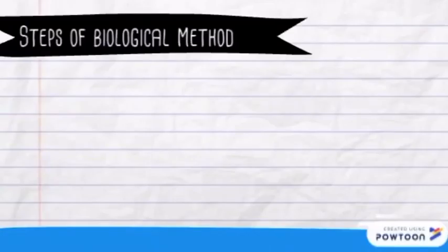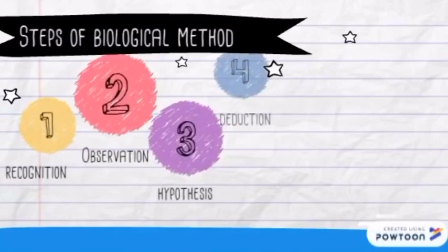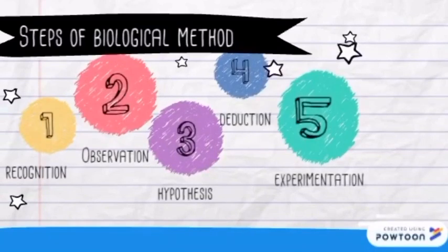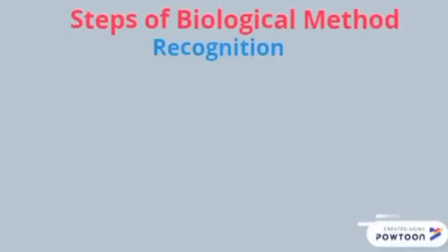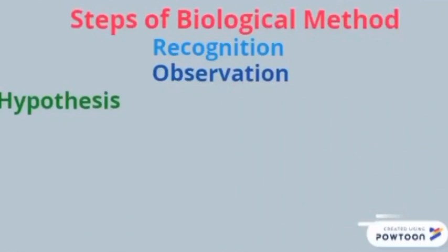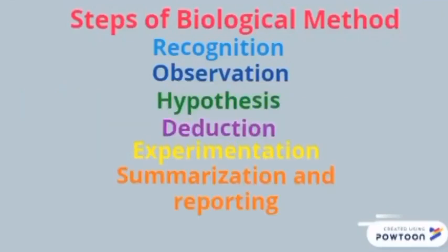Now we are going to see the steps of the biological method. The first step is recognition, then observation, hypothesis, deduction, experimentation, and summarization and reporting of results. Using these steps, we can solve the biological problem.